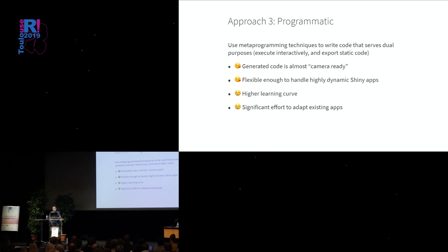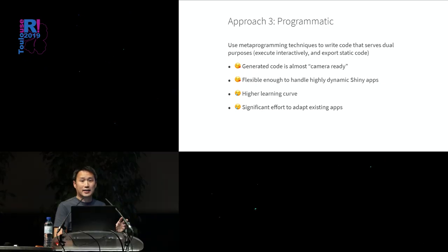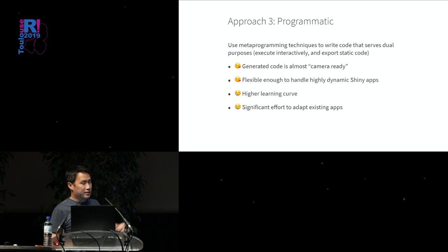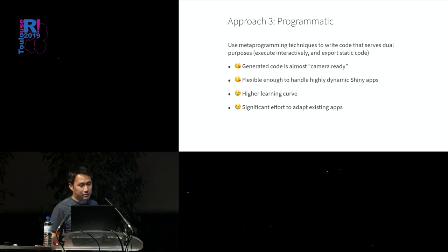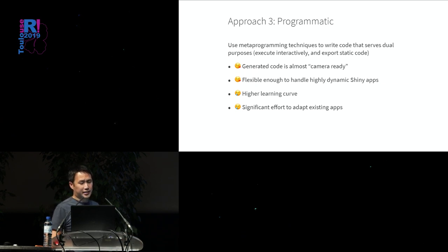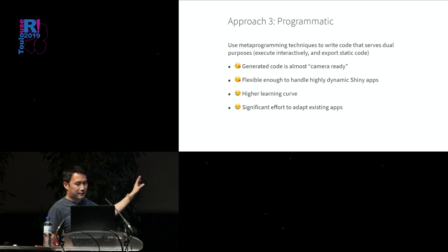The third approach is to do this programmatically using metaprogramming techniques — writing logic once that will simultaneously serve both purposes: execute interactively and export static code. The plus sides are the code is almost camera-ready and it's an extremely flexible approach that should handle any kind of Shiny app. The downside is a high enough learning curve that I could do a 45-minute talk about it. And if you have an existing app, you will have to make changes to fit this approach.